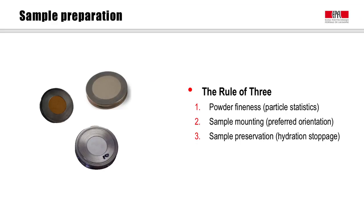First, the powder should be sufficiently fine to have a large number of crystallites able to diffract at any angle. Second, the sample should be mounted such that any artifacts are avoided, such as preferred orientation. And third, the sample mineralogy should be preserved as much as possible. To do this, it is often necessary to stop the hydration for hydrated samples.